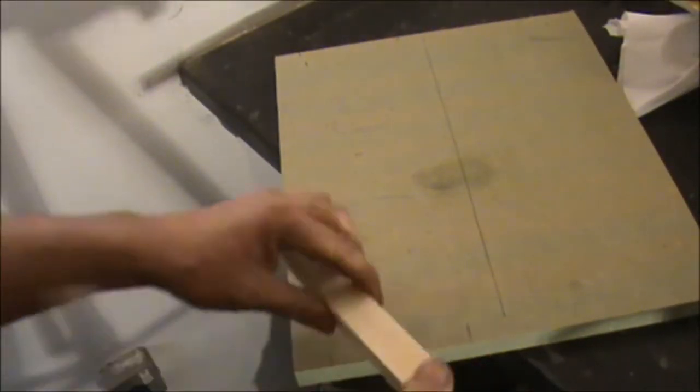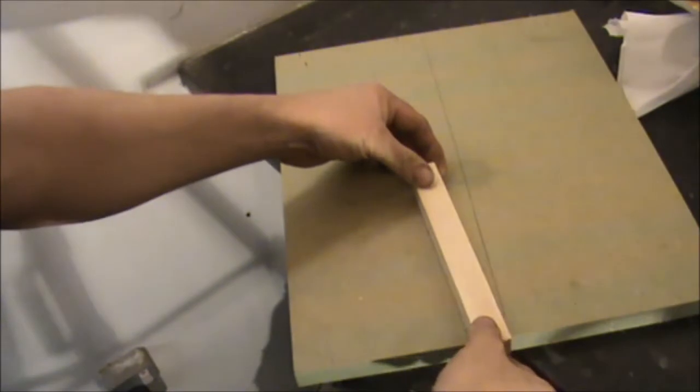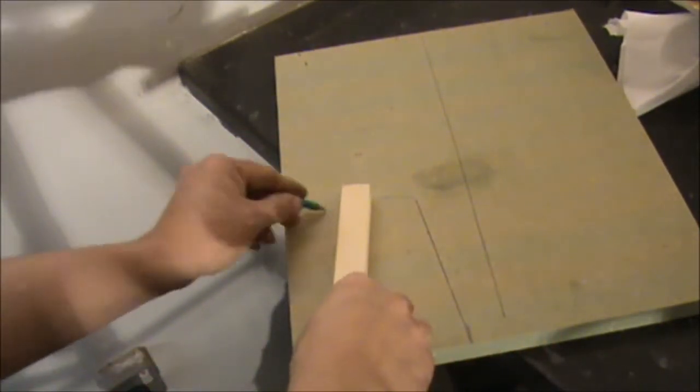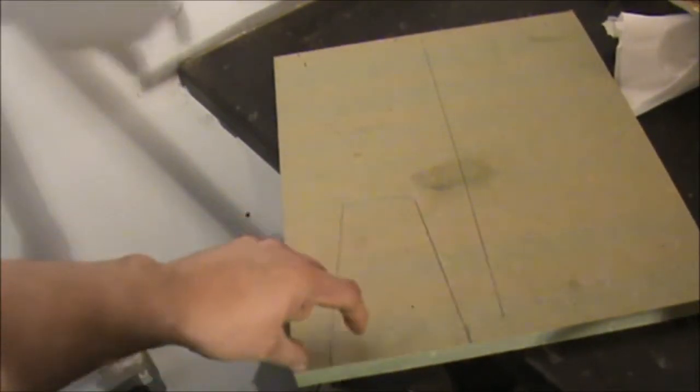First of all for our Christmas wrapping we need a bit of MDF, or pine, or plywood, or anything you've got to hand, it's fine. I'll mark it out as so. Nothing special, about an inch at the ends.